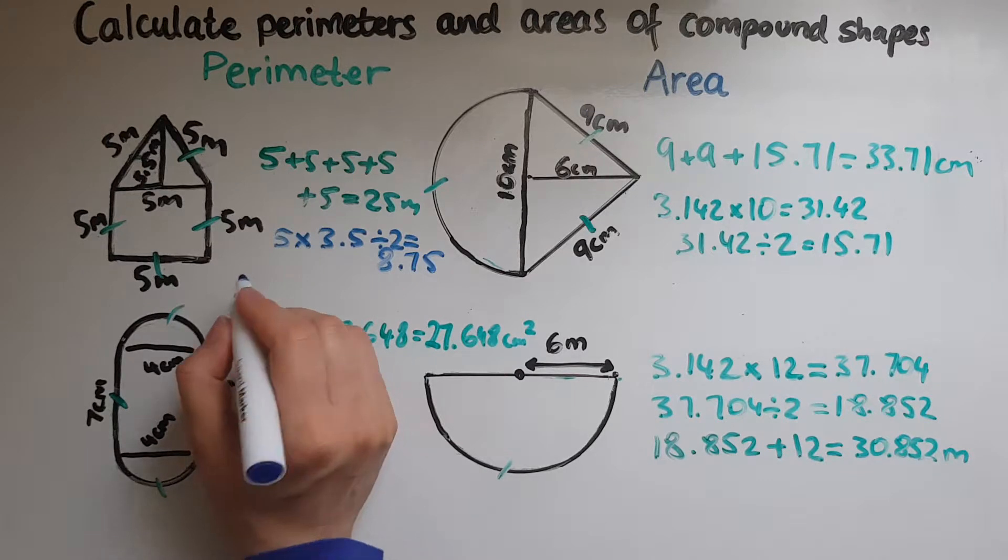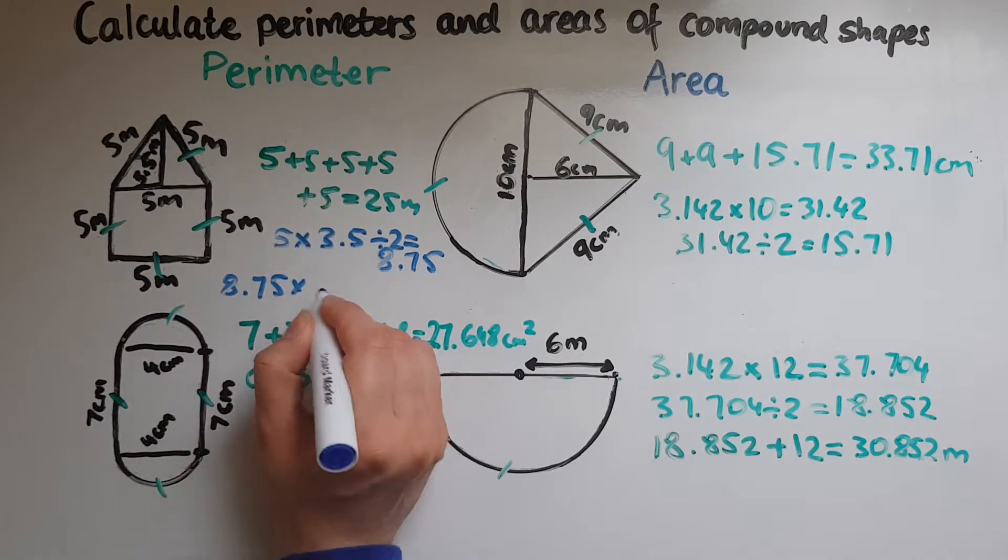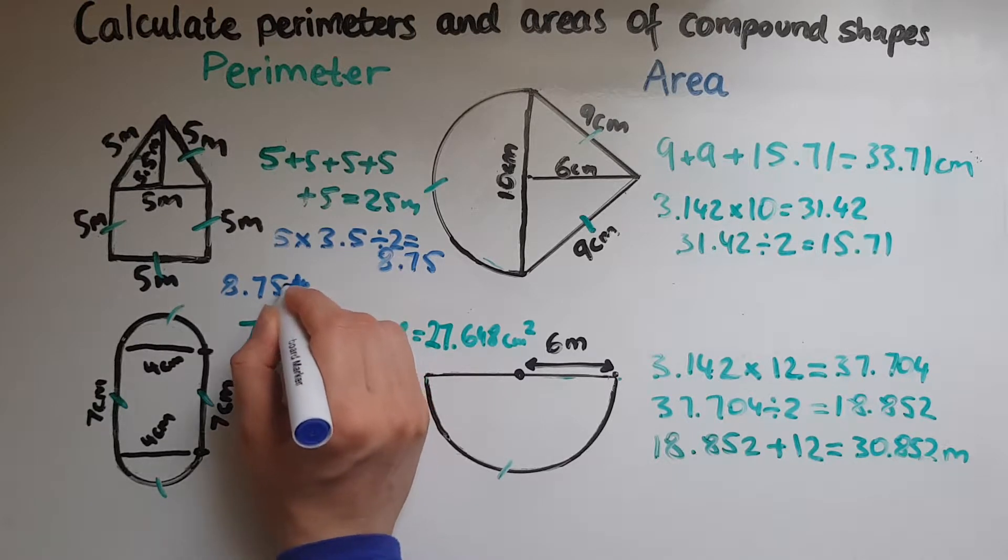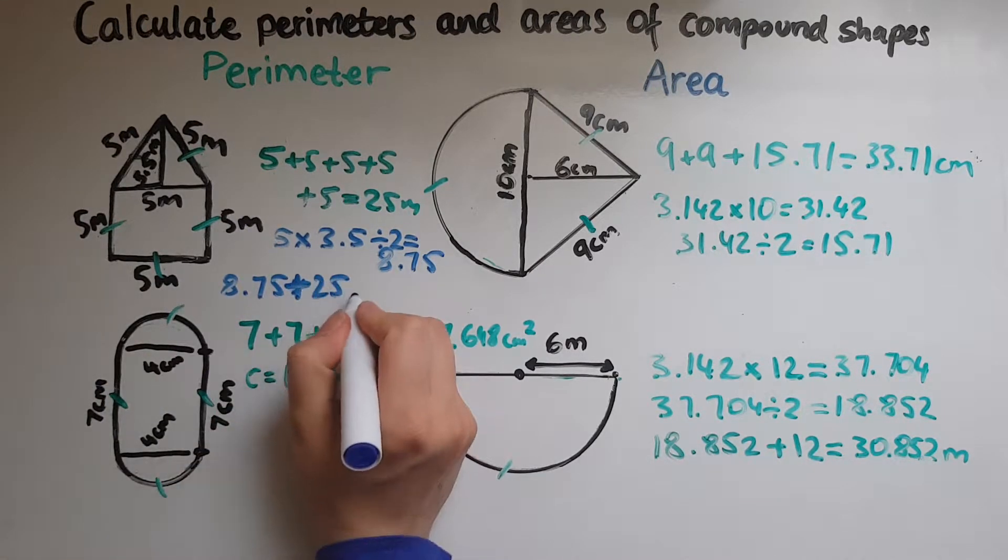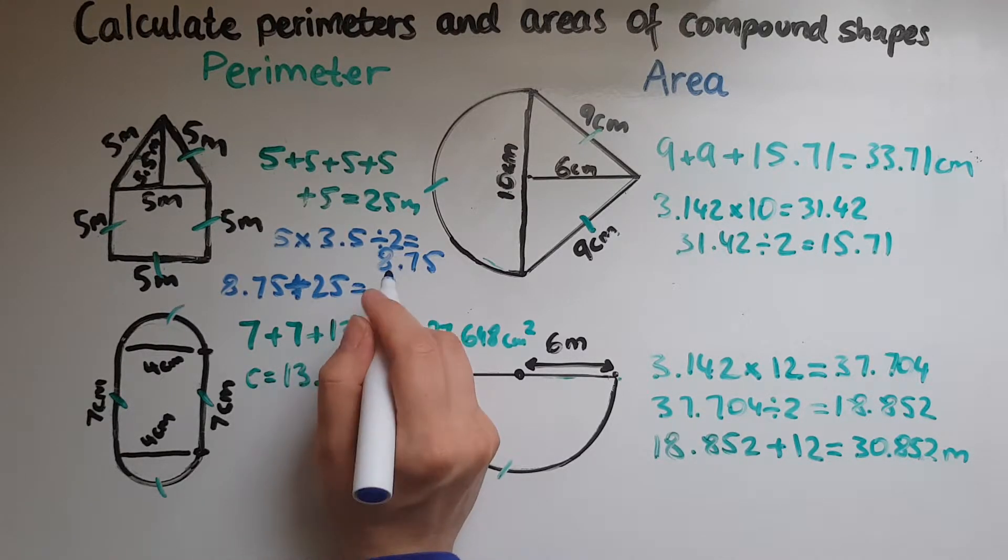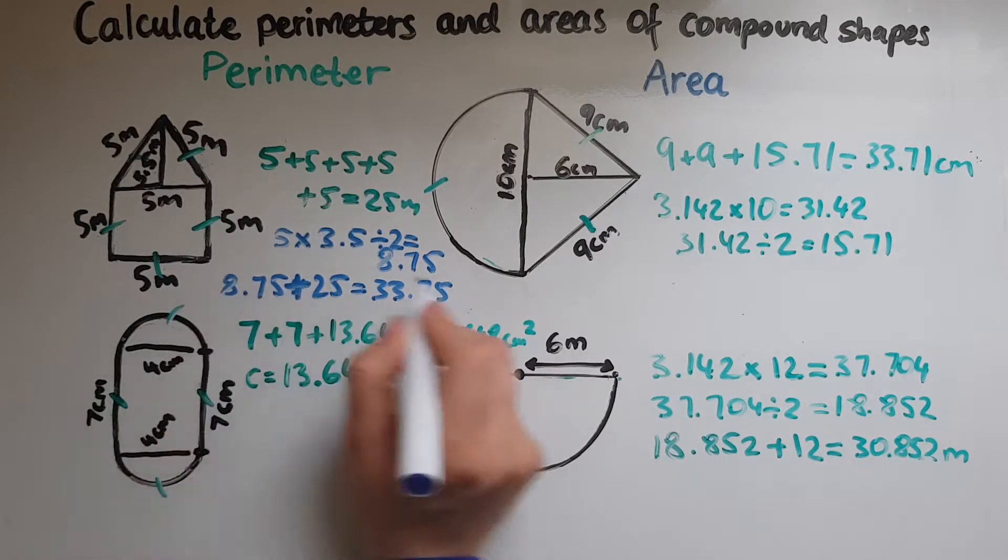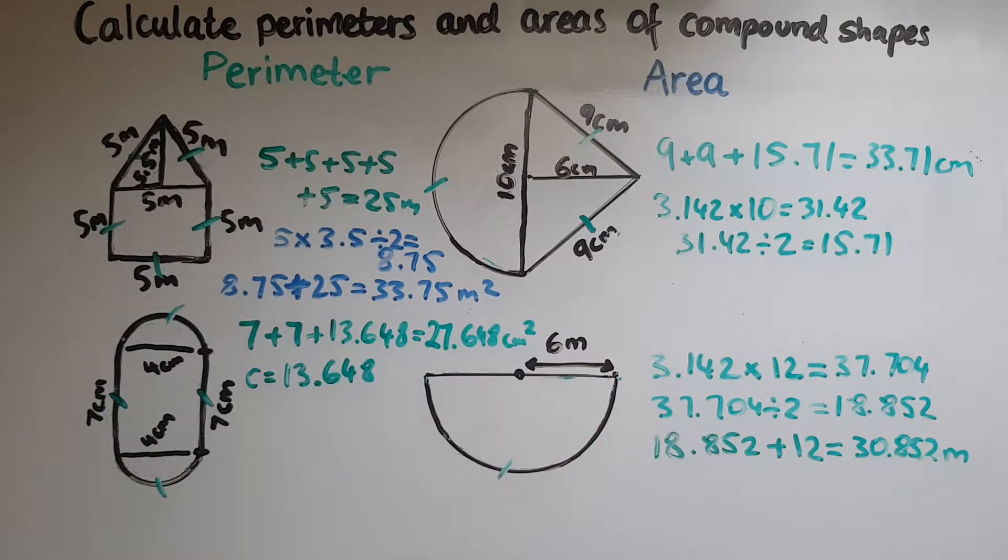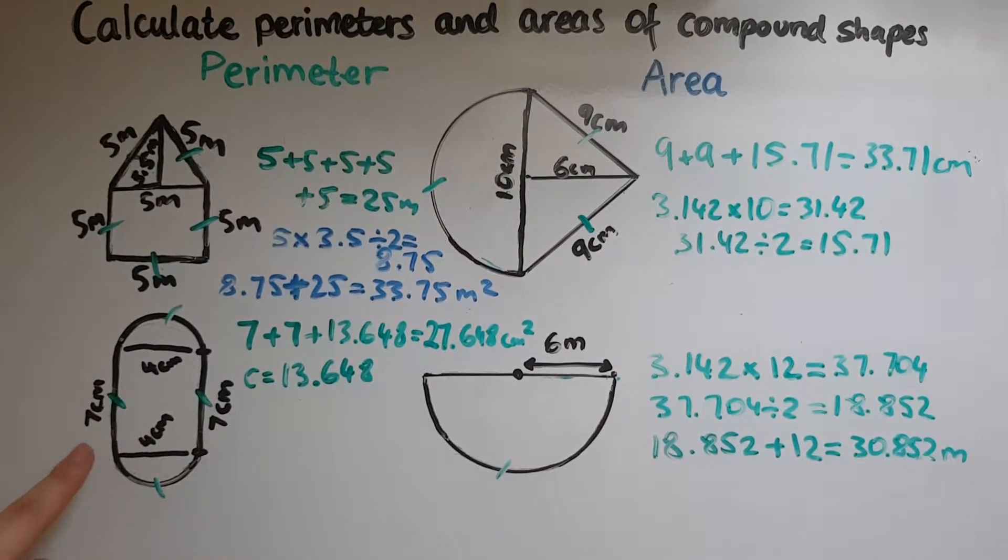I will add to that the area of the square which is five times five equals twenty five. So eight point seven five plus twenty five will give us thirty three point seven five meters squared.